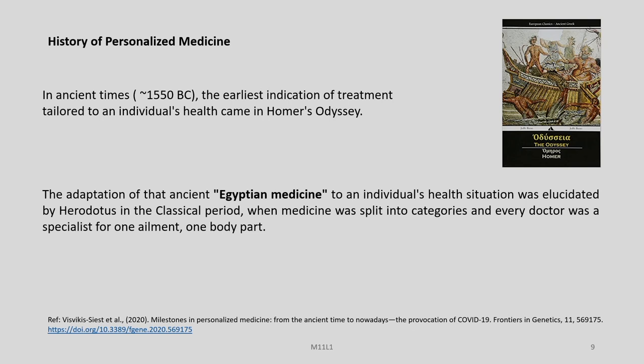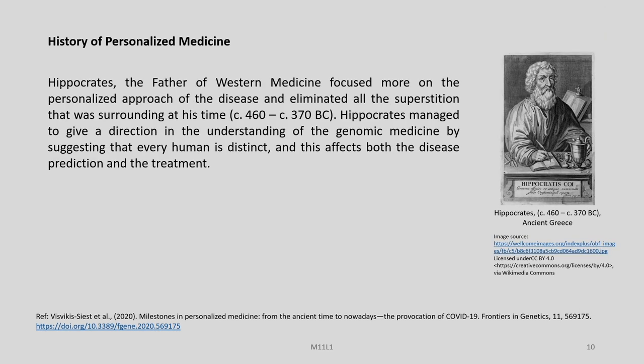In ancient times, around 1550 BC, the earliest indication of treatment tailored to an individual's health came in Homer's Odyssey. The adaptation of ancient Egyptian medicine to an individual's health situation was elucidated by Herodotus in the classical period, when medicine was split into categories and every doctor was a specialist for one patient and one body part. Hippocrates, the father of western medicine, focused more on the personalized approach to disease and eliminated all the superstition surrounding his time. Hippocrates managed to give direction in the understanding of genomic medicine by suggesting that every human is distinct and this affects both disease prediction and treatment.